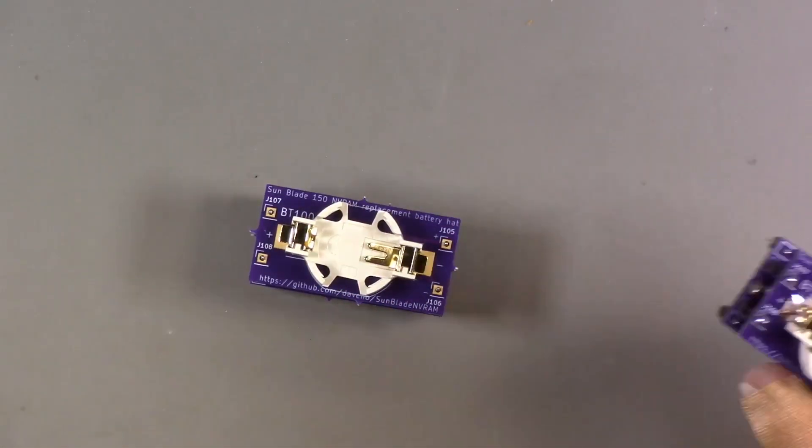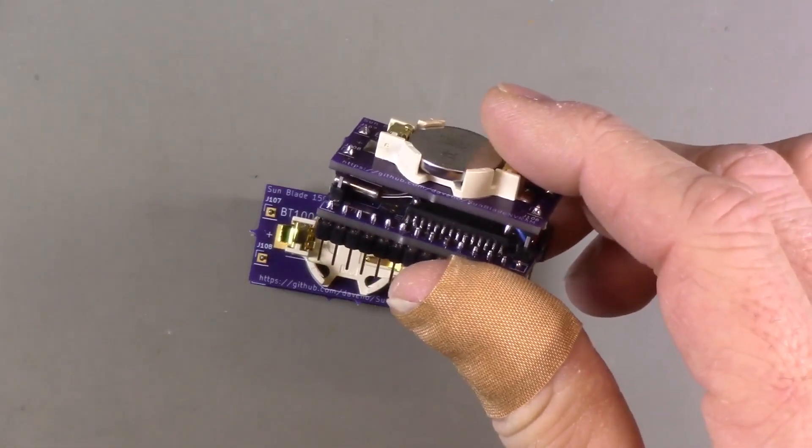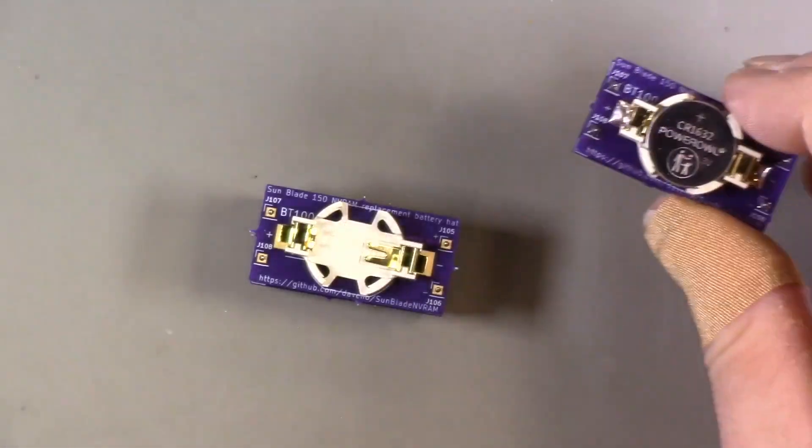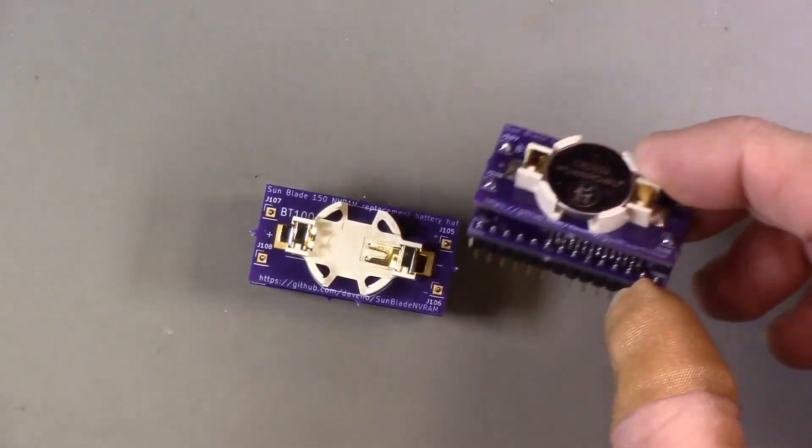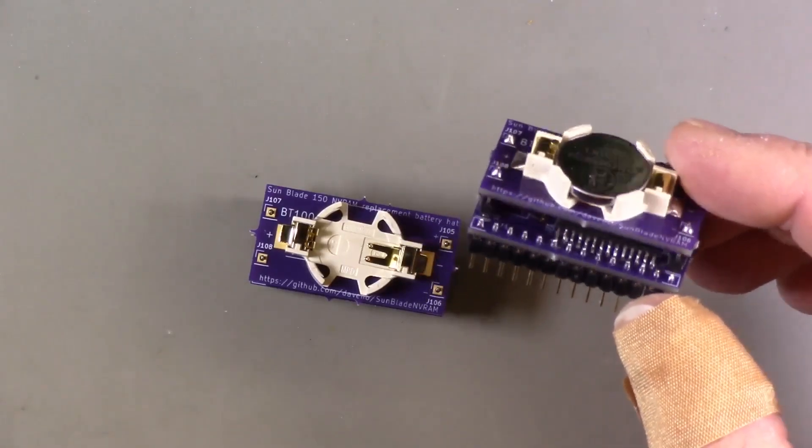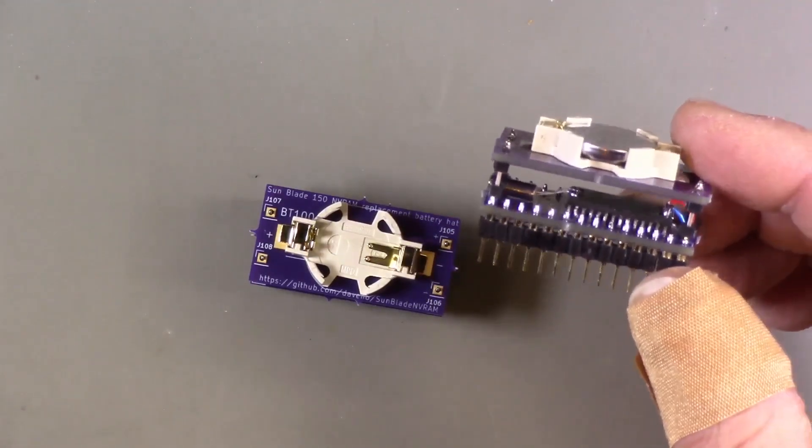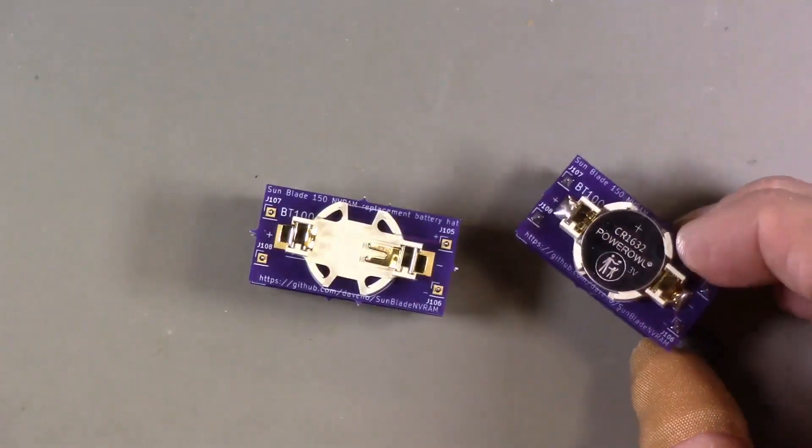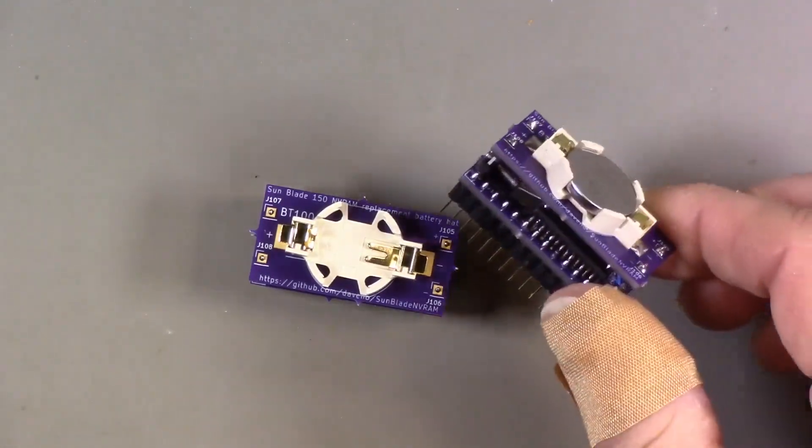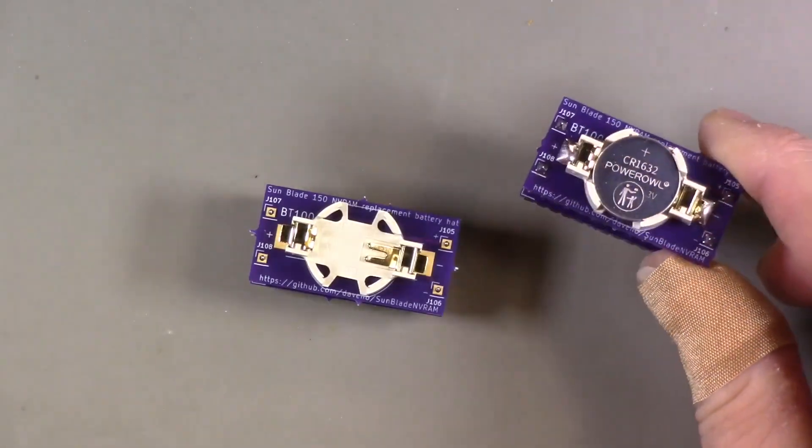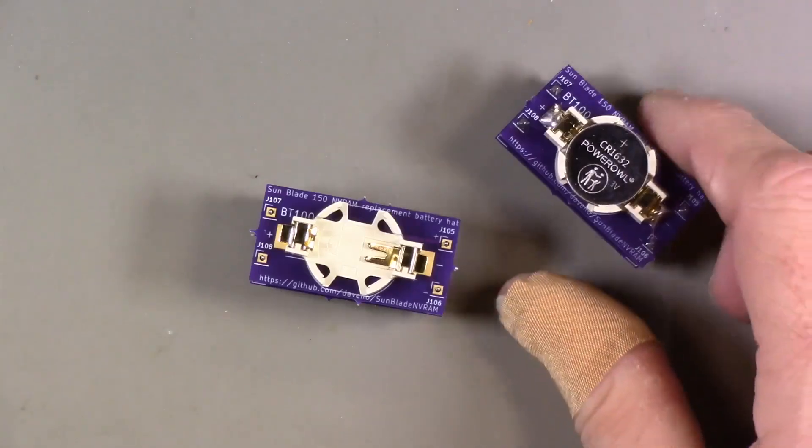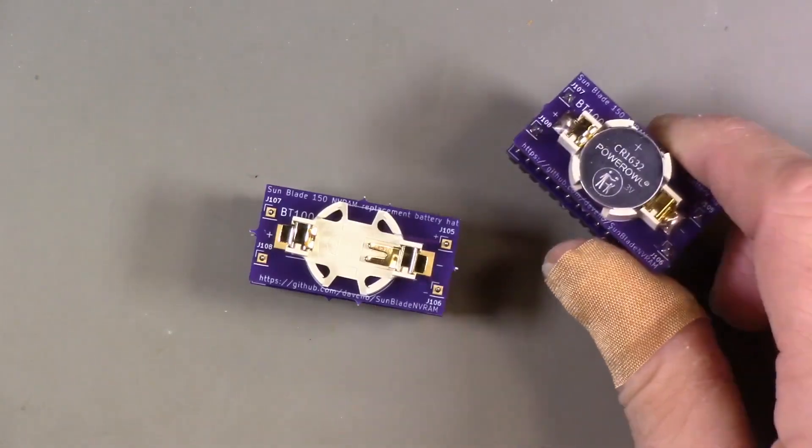The last problem with assembling one of these modules is that the surface mount version of the chip is also out of production. I found some on AliExpress, and since I do have one working module that I was able to create, then clearly at least some of them are good if you get them from this source. But in any case, if you can find the surface mount version, I think this is a pretty good option long term for replacing the M48T59Y in your Sun workstation.